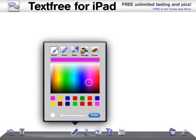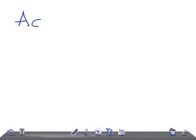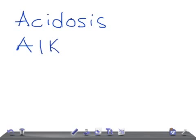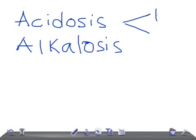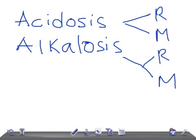Let me clearly start this new discussion on acidosis and alkalosis. In acidosis, it could be a respiratory acidosis or it could be a metabolic acidosis. There are also mixed conditions such as metabolic acidosis with compensation or respiratory alkalosis with compensation, but right now I will be talking about the basic things.